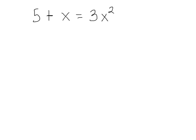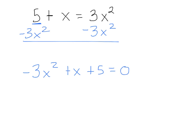So I'm going to subtract 3x squared on both sides like this. And so I have negative 3x squared. And then I'm not going to write the 5 first. What am I going to write? Plus x plus 5 all equals what? Zero. And so that's in standard form.